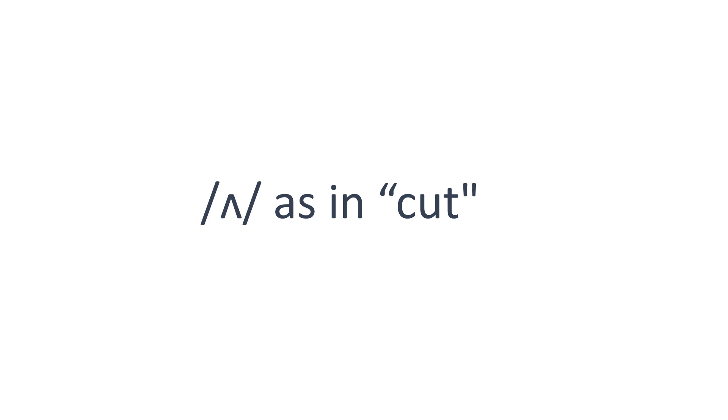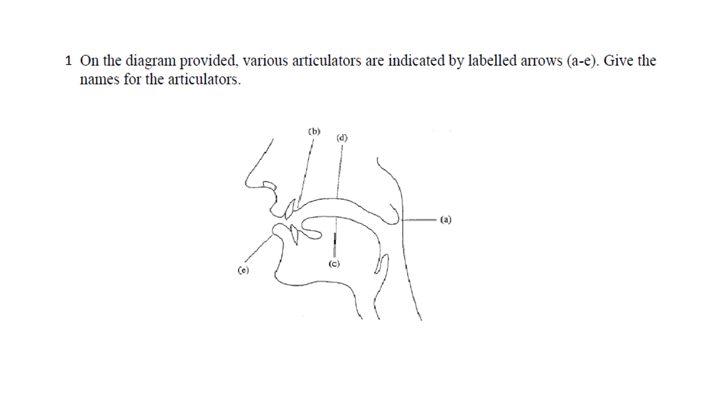On the diagram provided, various articulators are indicated by labeled arrows A to E. Write the names for the articulators. Stop the video for two minutes to do the exercise, then check your answer.